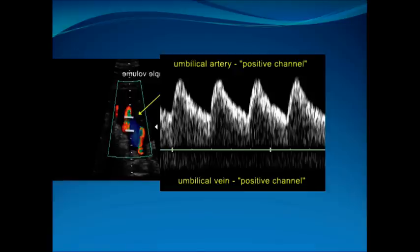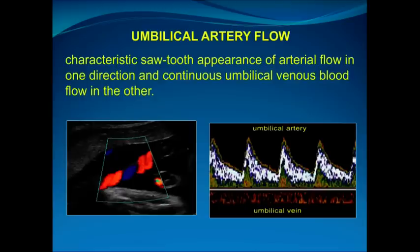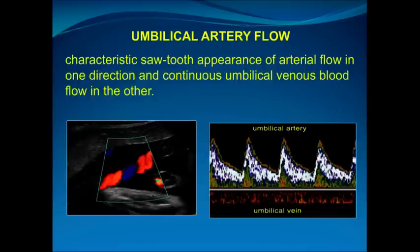When you apply the sampling, you get the typical pattern seen on the right-hand side, which shows the positive channel — the signal waveform above the line — and the umbilical vein seen below the line. They also have different sounds. The umbilical artery flow has a characteristic sawtooth appearance in one direction and the continuous umbilical venous blood flow in the other. On the left, we've applied the colour box to the cord and sampled where turbulent flow was seen. The artery is above the line and the vein below, with that characteristic sawtooth appearance.